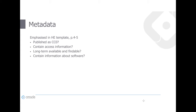The Horizon Europe template also stresses the accessibility of metadata. Metadata should be published as CC0, meaning they can be harvested by other repositories and are in the public domain — everyone can reuse metadata. Metadata should contain access information, information on whether the data is long-term available and findable even after the research data themselves may no longer be available, and information about the software necessary to access the data.